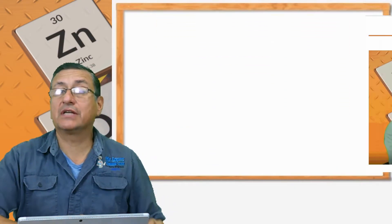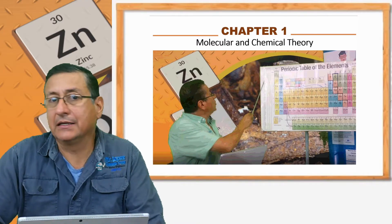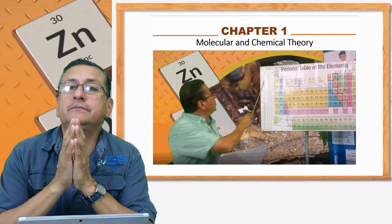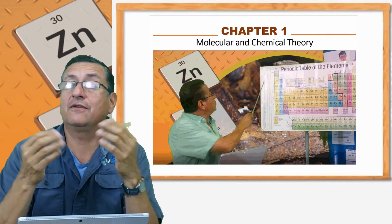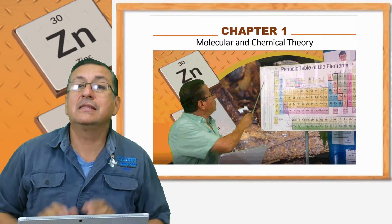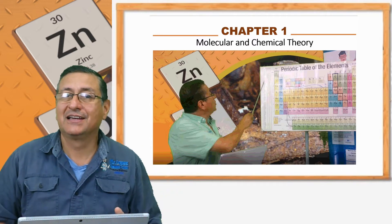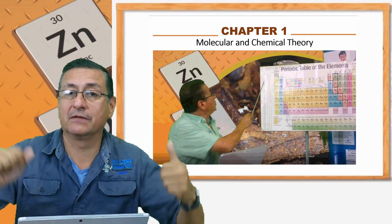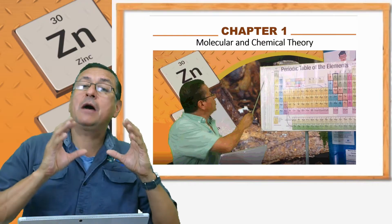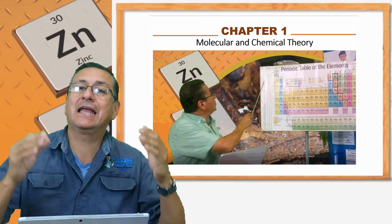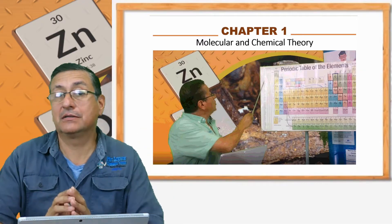We are going to start in Chapter 1 with the molecular and chemical theory. This is the fundamental. We need to understand the location of the elements in the periodic table and identify where the metals and alloys recommended in the marine environment are located. We need to identify which metals are appropriate for creating excellent alloys. For that reason, the study of the periodic table is fundamental.